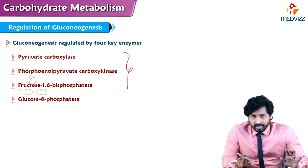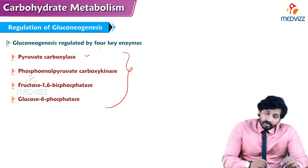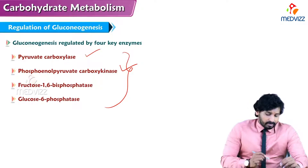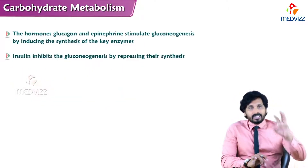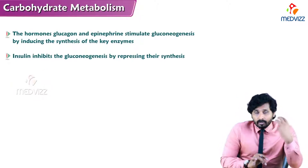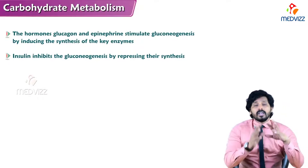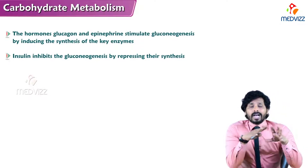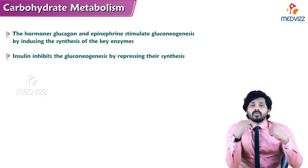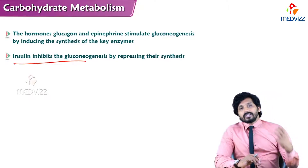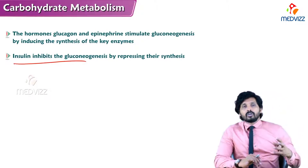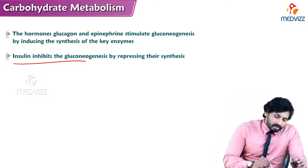Regarding regulation of gluconeogenesis, the four key enzymes involved in the special reactions — pyruvate carboxylase, phosphoenolpyruvate carboxykinase, fructose-1,6-bisphosphatase, and glucose-6-phosphatase — all have to be regulated. There is also hormonal regulation: glucagon is a hyperglycemic hormone and acts as a positive stimulator for gluconeogenesis, while insulin is a hypoglycemic hormone and inhibits gluconeogenesis.